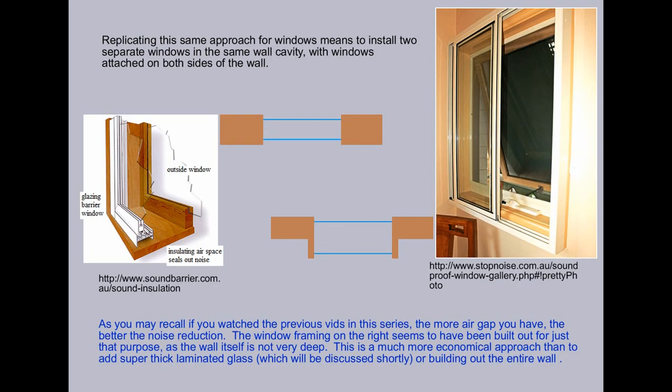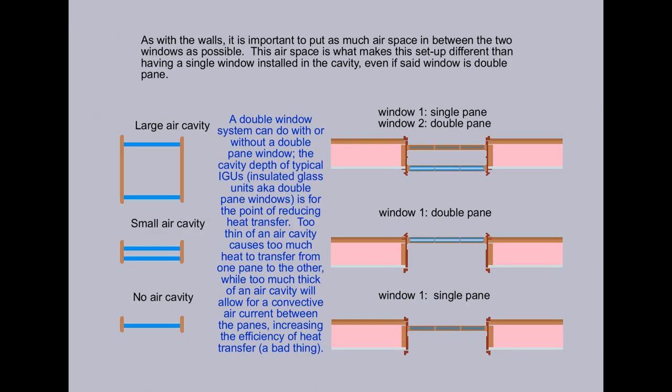Replicating this approach for windows means to install two separate windows for the same wall cavity with windows attached on both sides of the wall. As with walls, it is important to put as much airspace between the two windows as possible. This airspace is what makes this setup different than having a single window installed in the cavity, even if said window is double-paned.